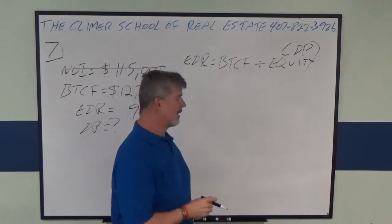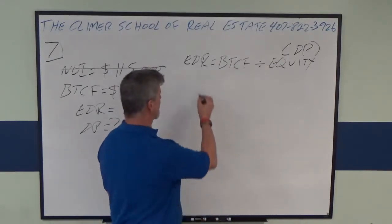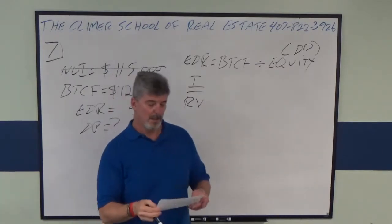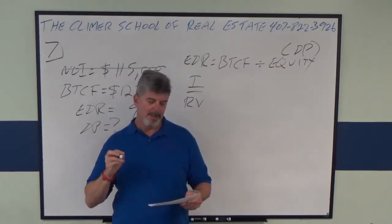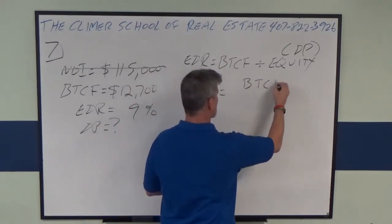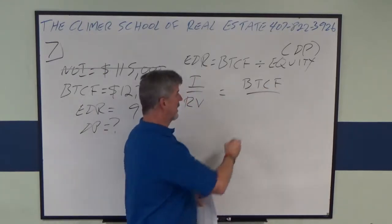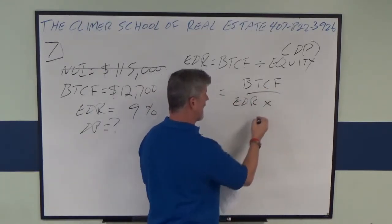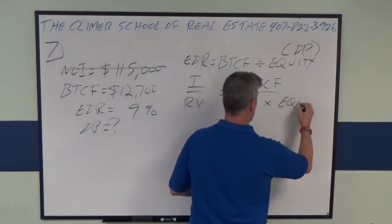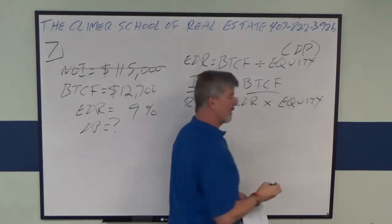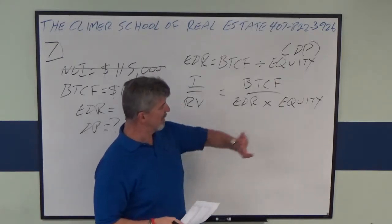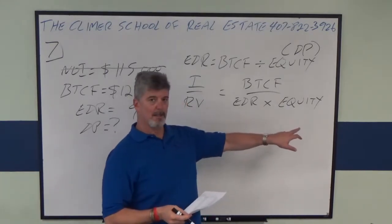Do you remember I over R×V? Does that look familiar? This is the same thing as before-tax cash flow over equity dividend rate times equity. The relationships are the exact same thing. So in this case we're looking for equity.